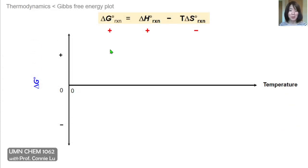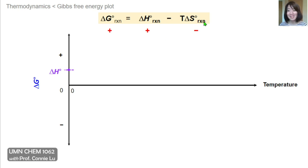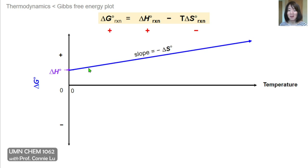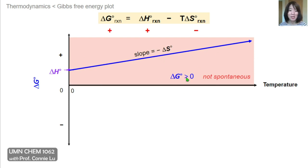In the next scenario, we consider the unfavorable conditions where the reaction is endothermic and the change in entropy is negative, so the sign of delta G can only be positive. In the linear plot, delta H is the y-intercept and is positive, sitting above zero. Because the slope equals minus delta S and delta S is negative, the slope of the line will be positive overall. At low temperatures — even zero Kelvin — the reaction is not spontaneous, and as we increase temperature, it becomes only less spontaneous. Delta G will always be greater than zero under these conditions.